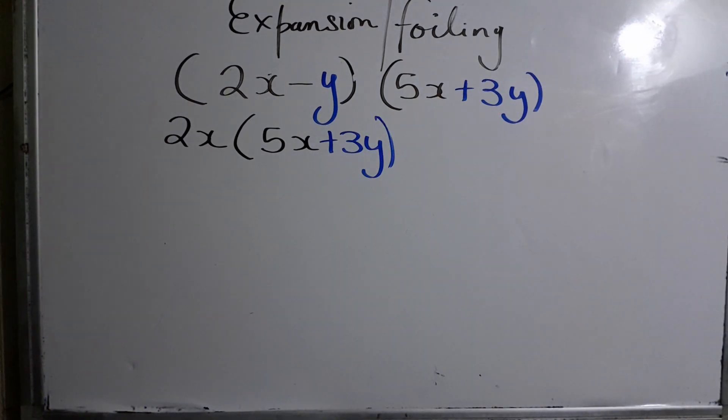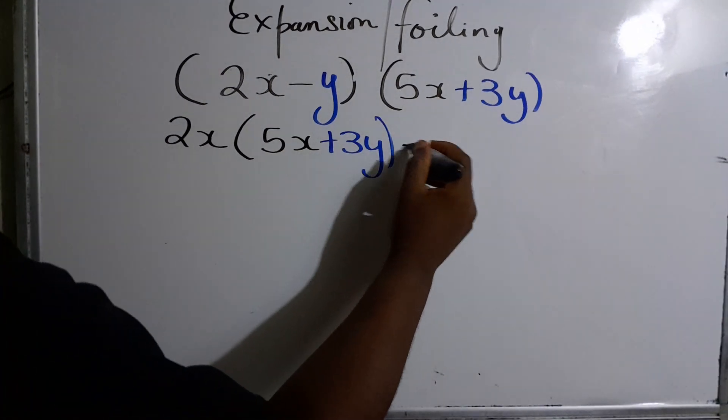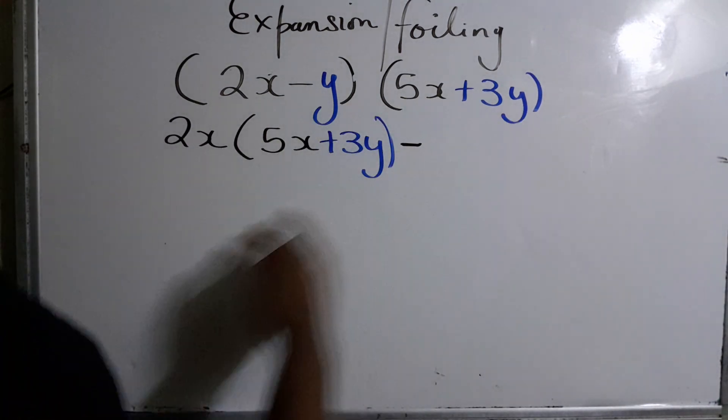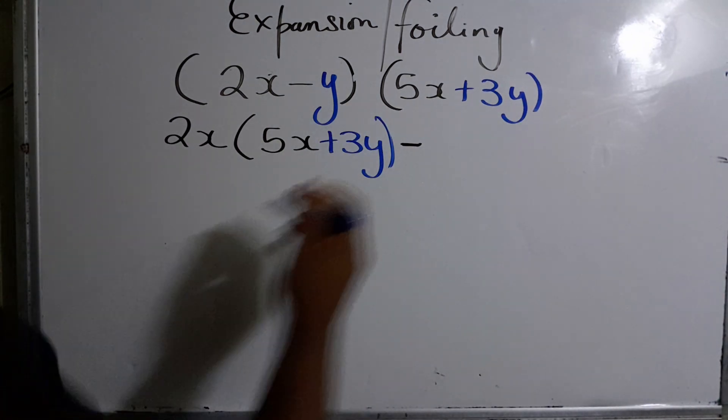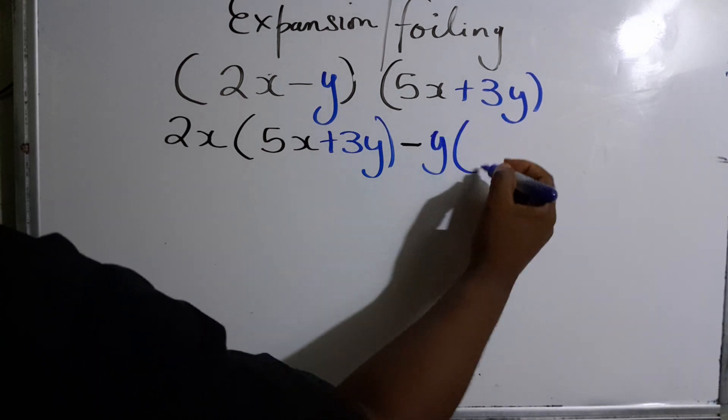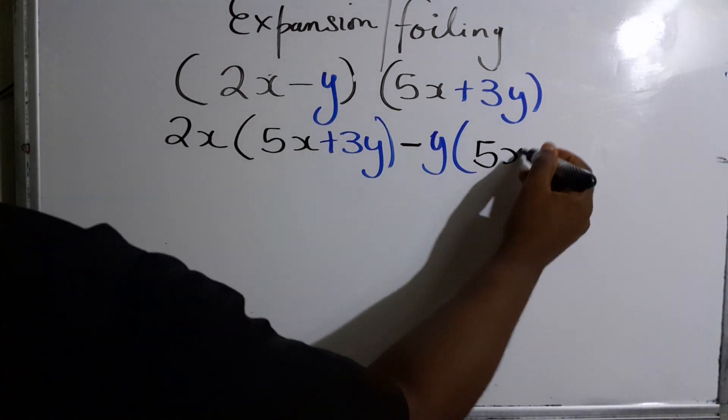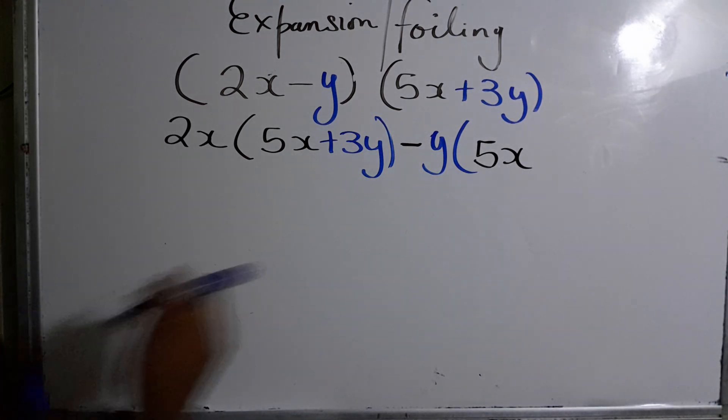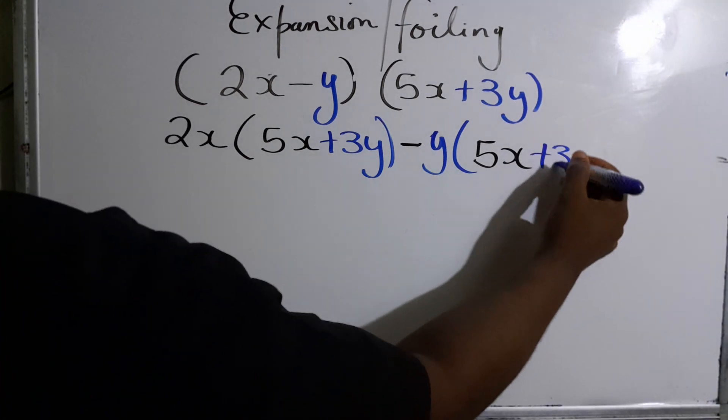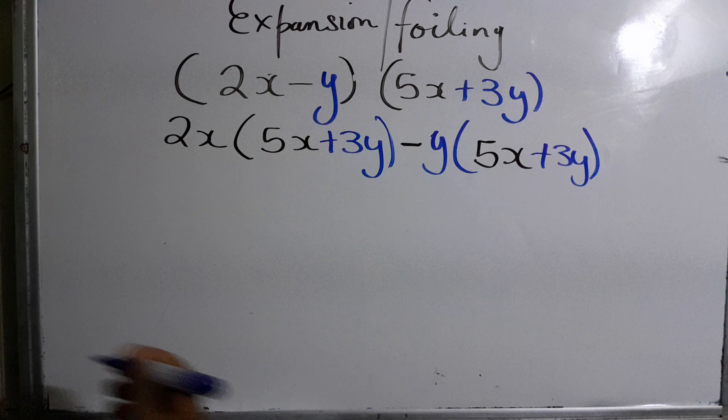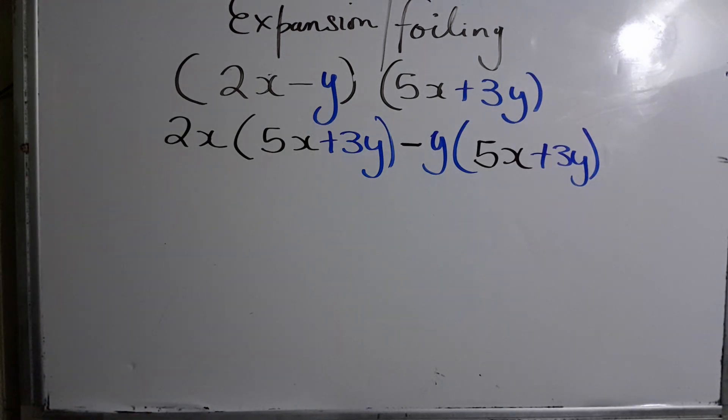Next, we use negative y. We're going to use negative y multiplied by all of what is in this bracket also. I color code it so everybody can see exactly. Sometimes persons aren't sure what's happening, but this channel caters for everyone. Let's go.